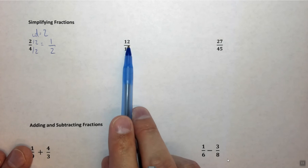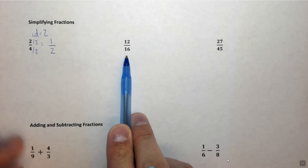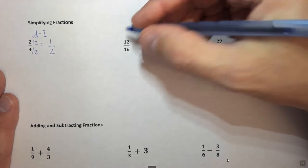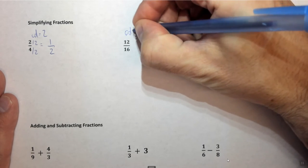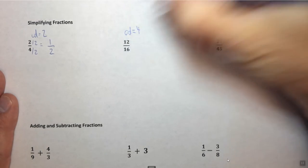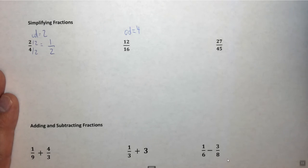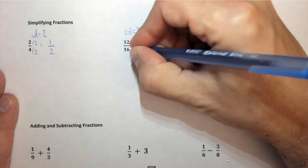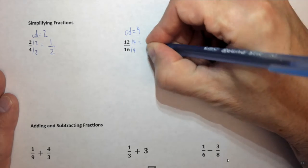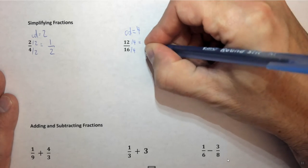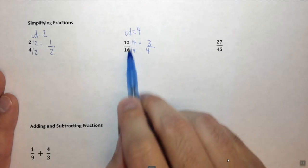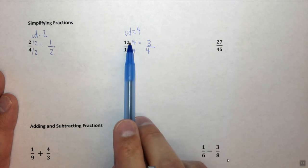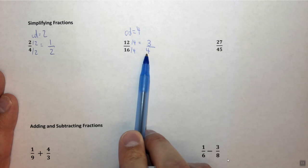Let's look at the next example. We have 12 over 16. In this case we could divide both of these by 4. So the common denominator is 4. I want to take the top and divide by 4, and that's 3. Take the bottom and divide by 4, and that's 4. So I'm dividing both the top and the bottom by 4, and I'm finding that 12 sixteenths is simplified to 3 quarters.